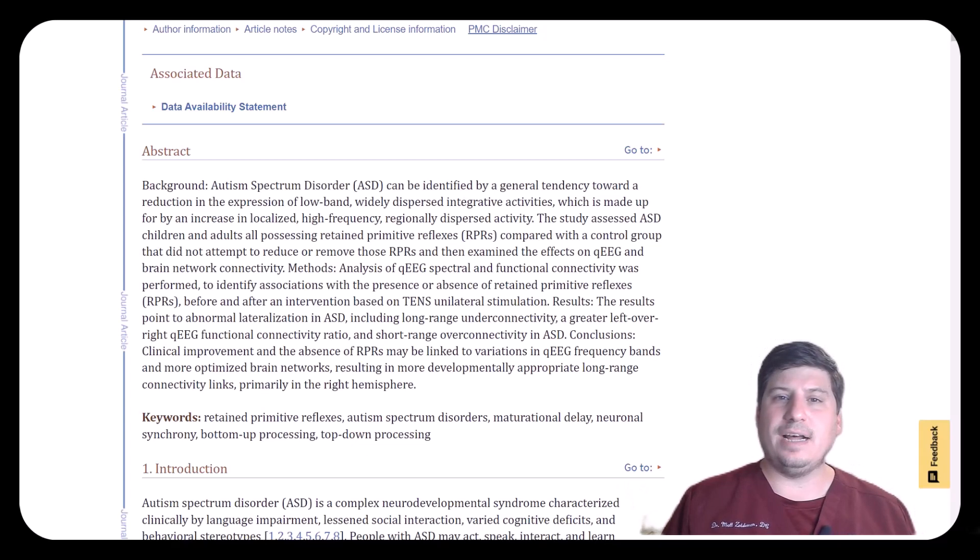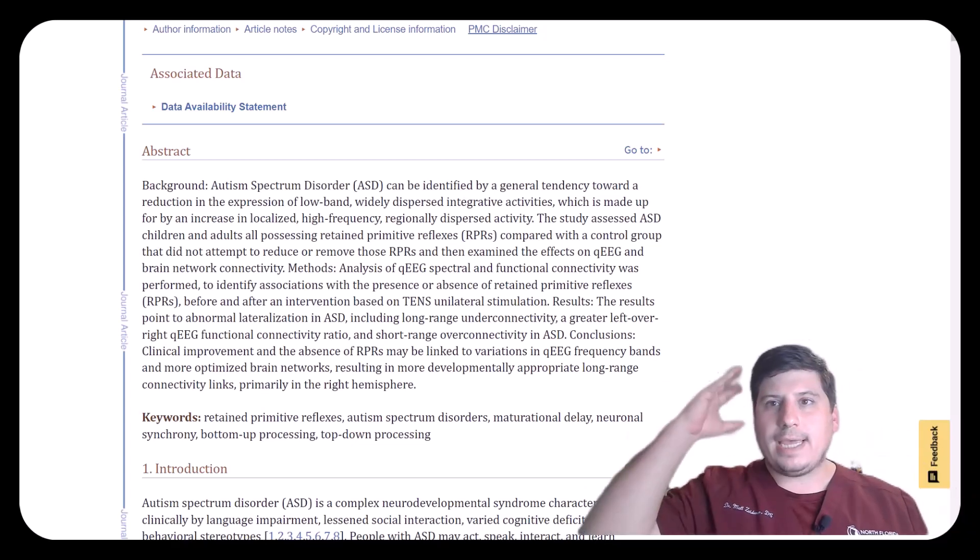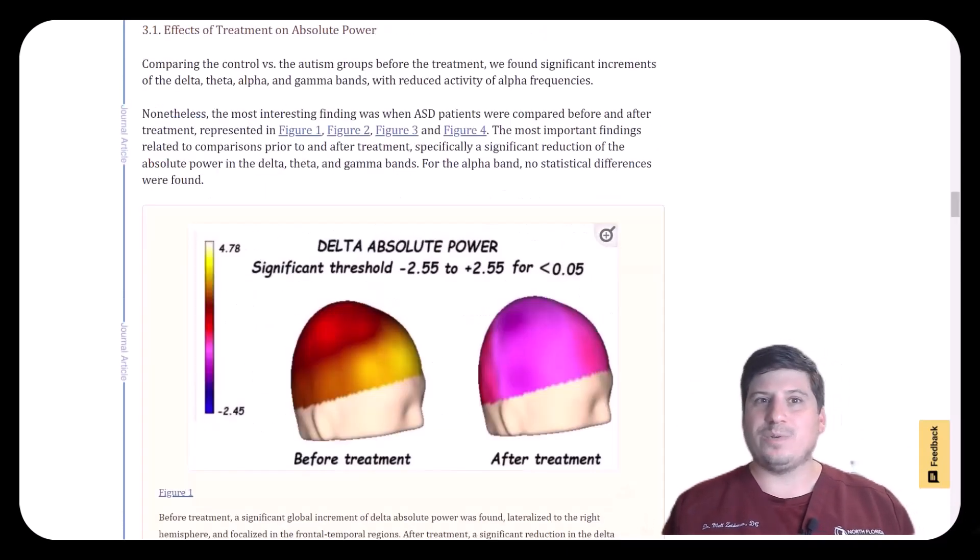Now treatment in the study consisted of hemispheric sensory stimulation using a TENS unit, which is an electrical stimulation on the left upper back to stimulate the right hemisphere of the brain, and primitive reflex stimulation over a course of 12 weeks. So let's look at those results. First, let's look at delta waves.